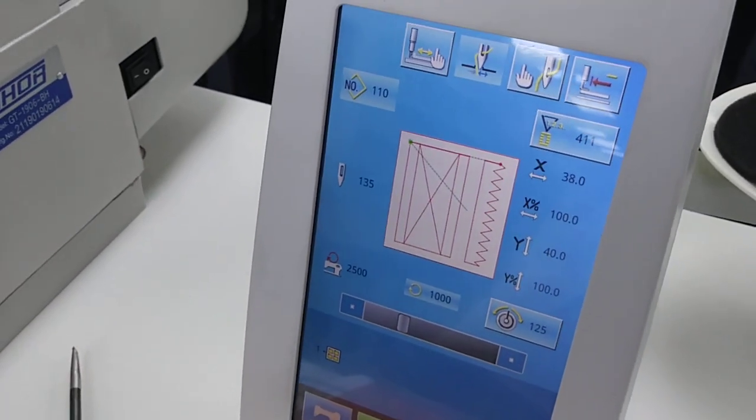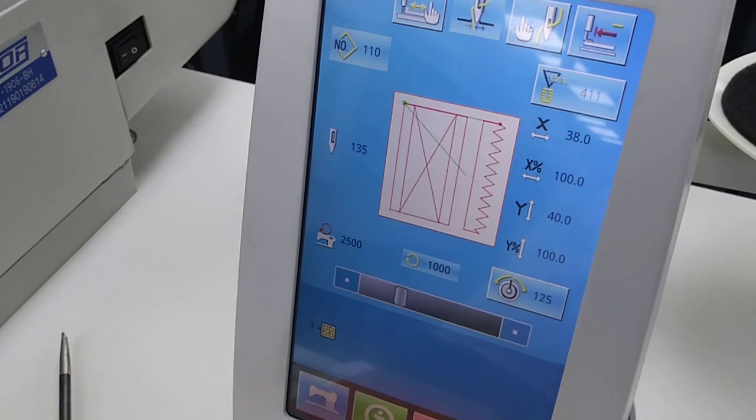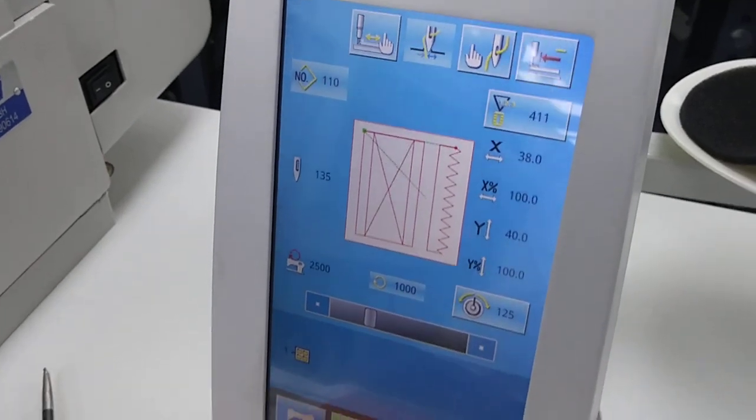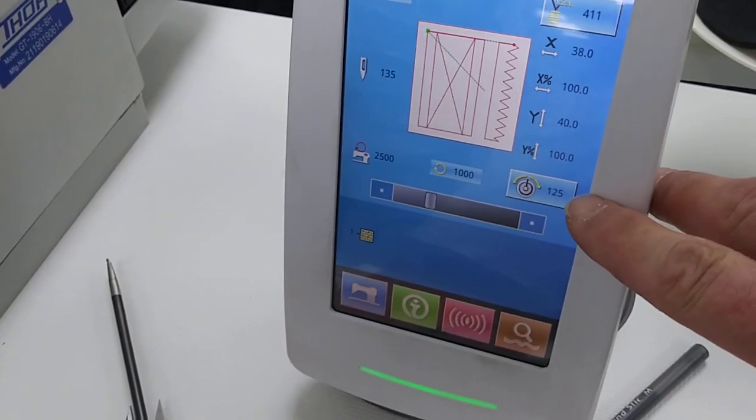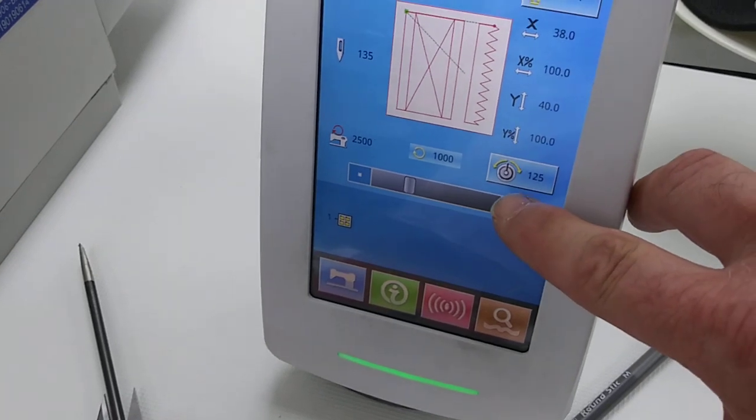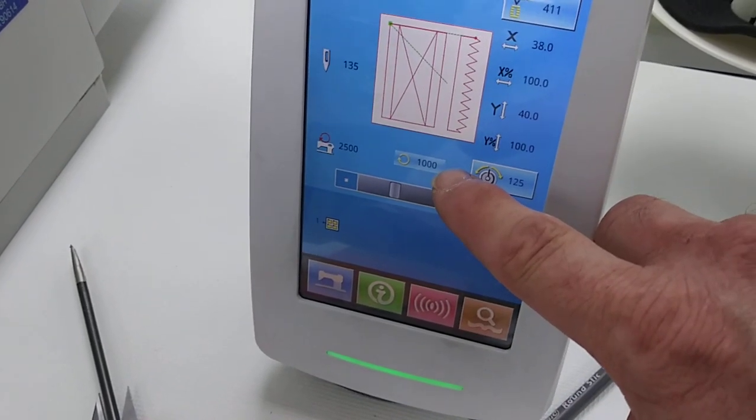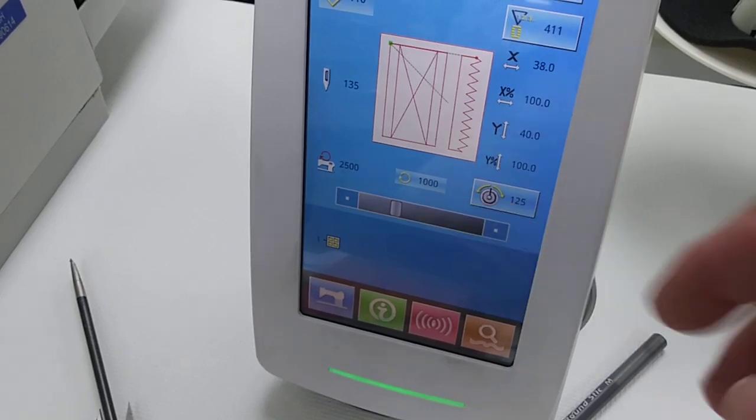I programmed that pattern within probably 3 minutes. Everything is digital control. You got digital tension here set at 125 right now. This is your speed, even though I got a thousand stitches a minute, which would be ideal for this kind of webbing.